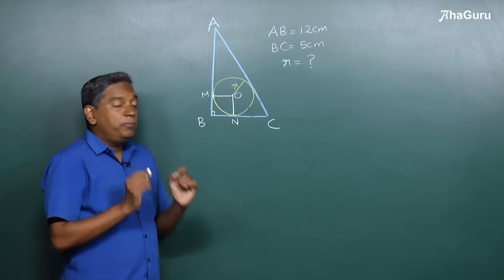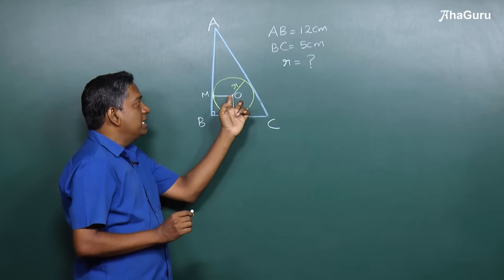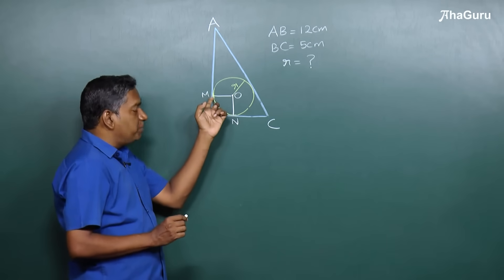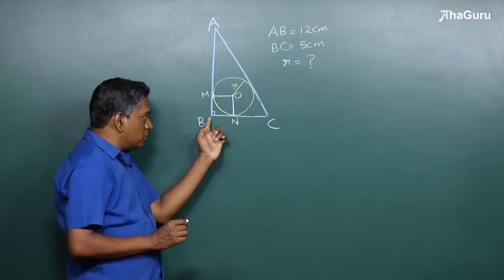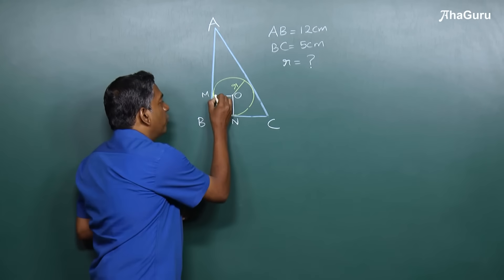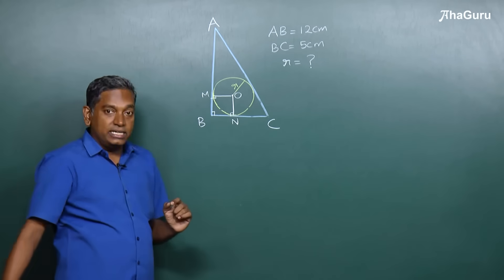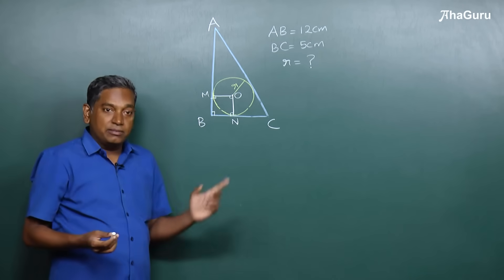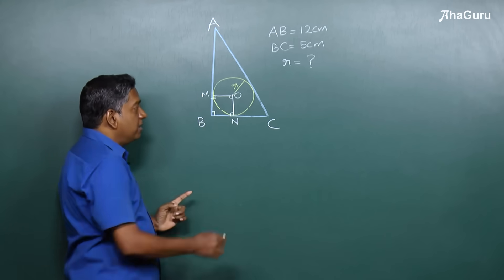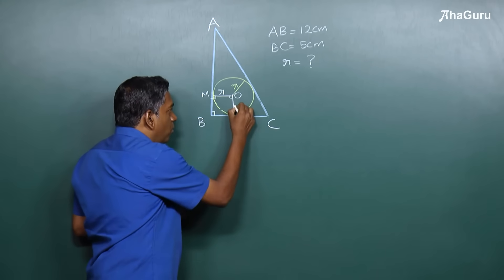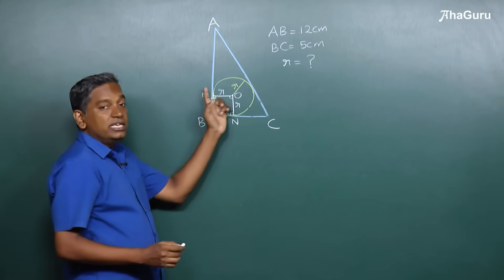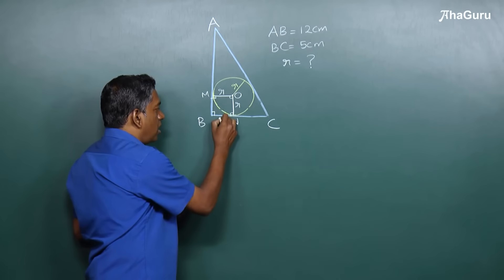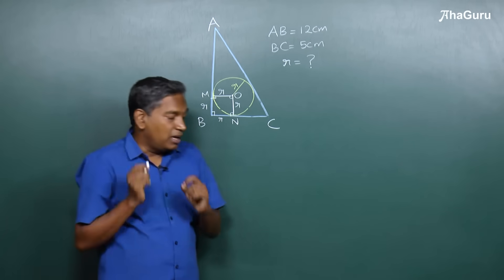We know the property that the line joining the center to the point of contact of a tangent — that is, the radius — is perpendicular to the tangent. Similarly, this radius is also perpendicular to tangent BC. Therefore, this entire quadrilateral is actually a rectangle because all angles are 90 degrees. But because OM is also a radius and ON is also a radius, it's actually a square.